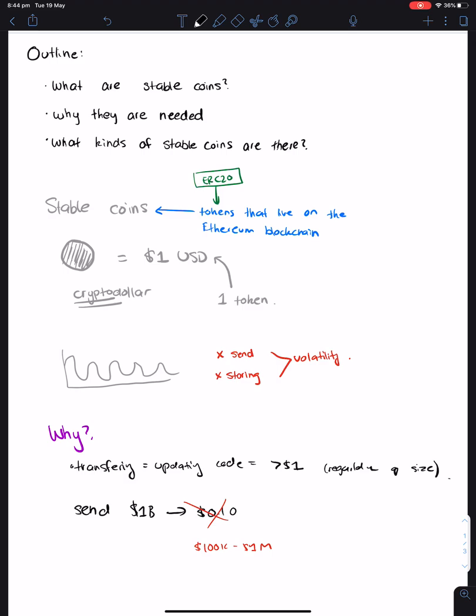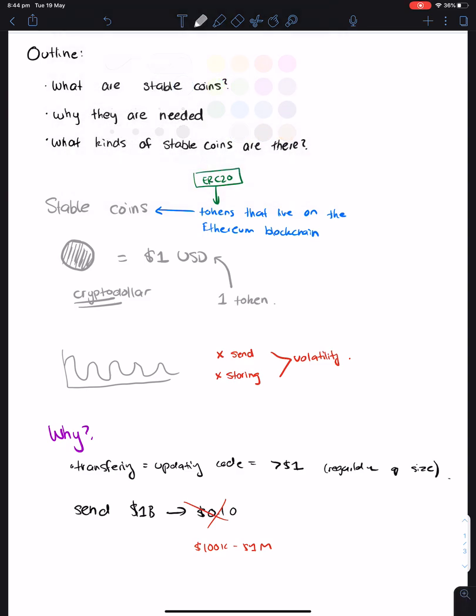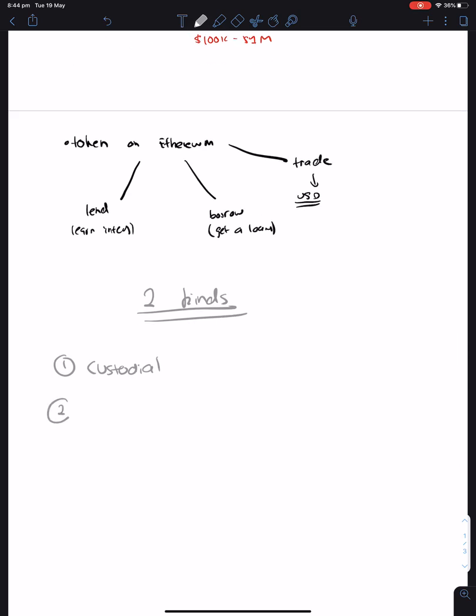What we haven't discussed is what are the different kinds of stablecoins, or the most popular ones. At a broad category, there's two kinds of stablecoins.